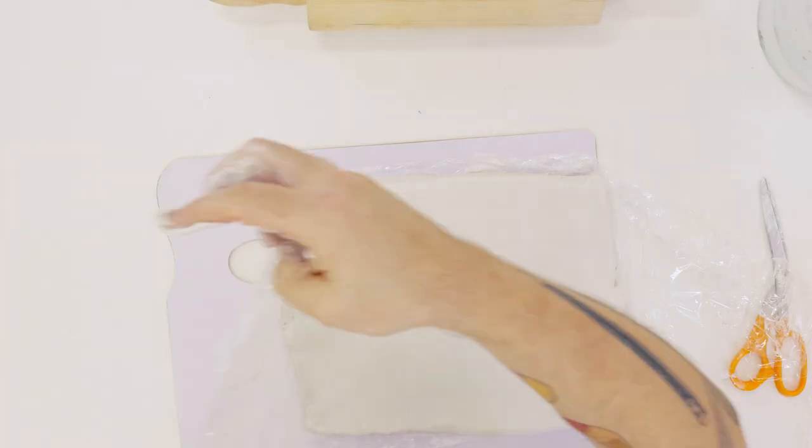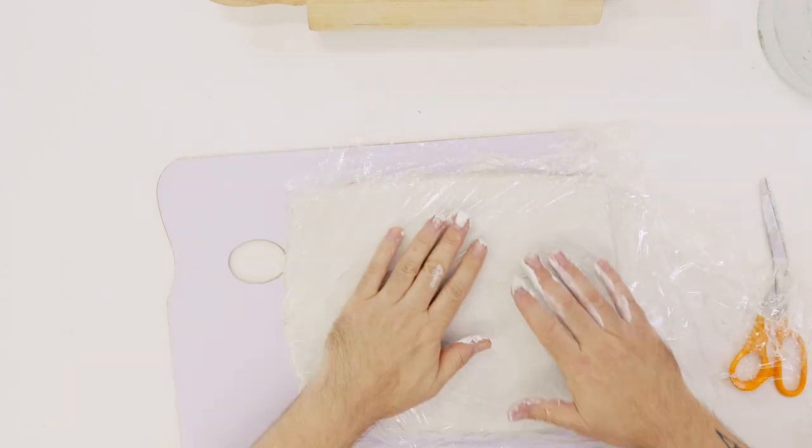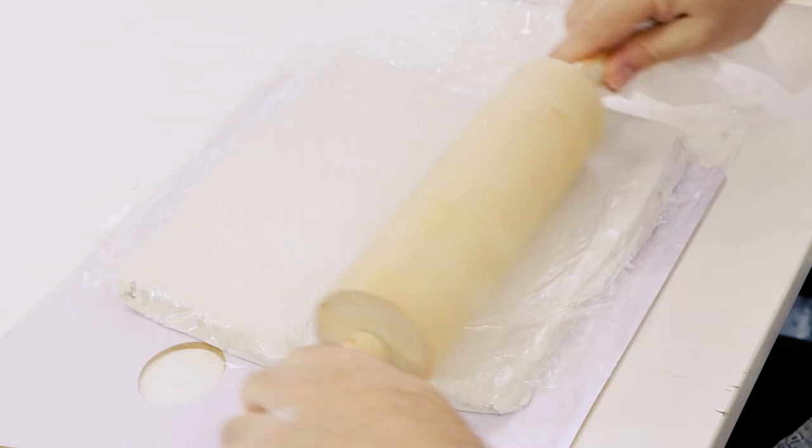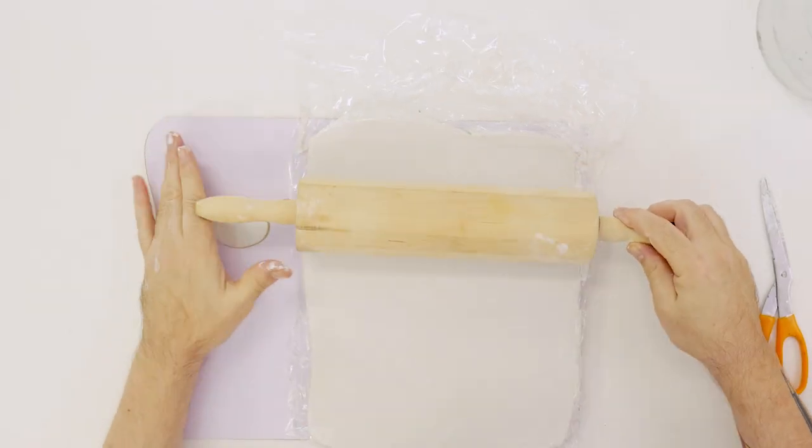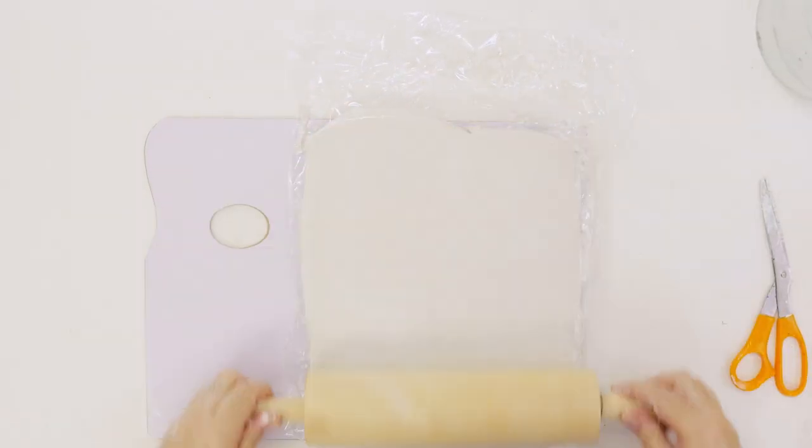Cover the clay again with cling film, roll it flat with the rolling pin, then flip it over and roll it with the rolling pin until it reaches a thickness of 20 to 25 millimeters.